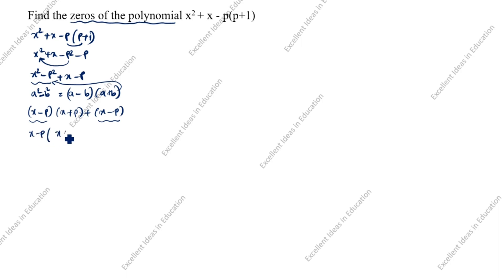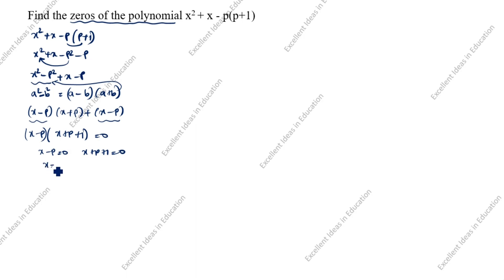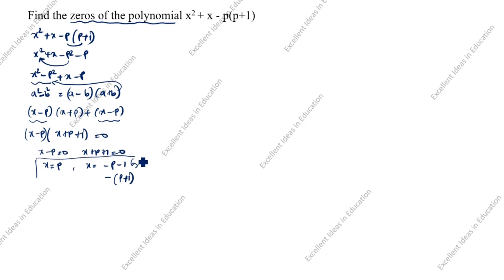Taking (x - p) outside, what remains is (x + p + 1) equal to 0. So: x - p = 0, and x + p + 1 = 0. Therefore x = p, and x = -(p + 1) or -p - 1. These are the zeros of the polynomial. This is the first method.